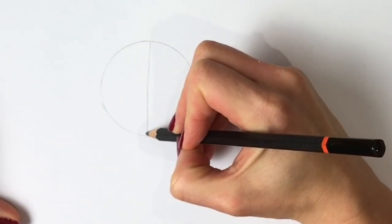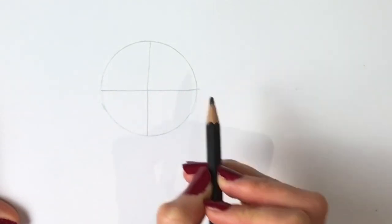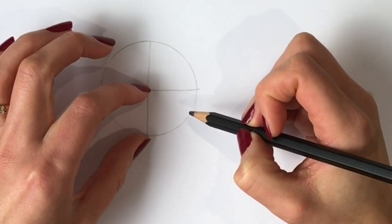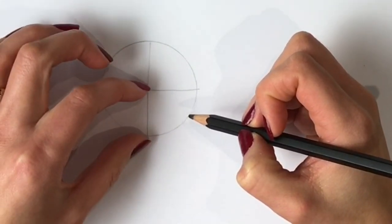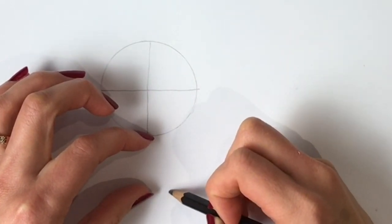So just draw a line going down and then cut it in half again with a line going horizontally. Now this distance is going to be the distance to the bottom of the foot, so just roughly measuring I'm just going to measure down so the foot will come to about there.